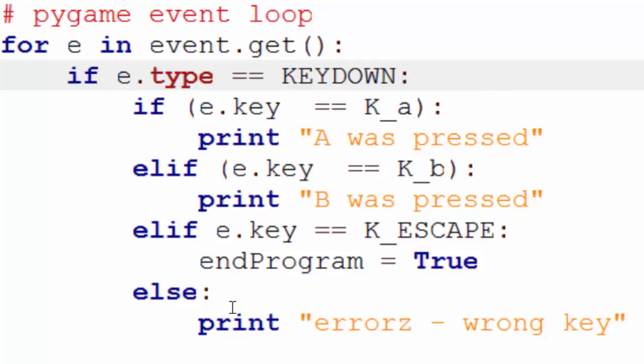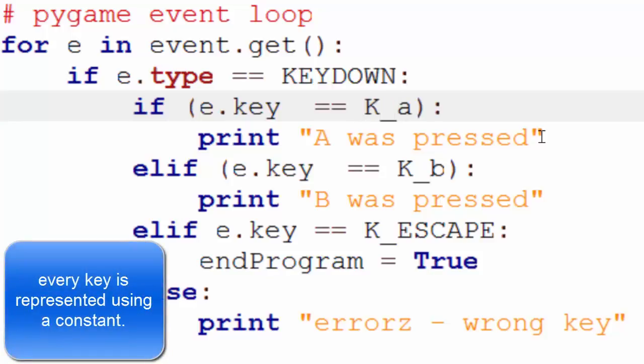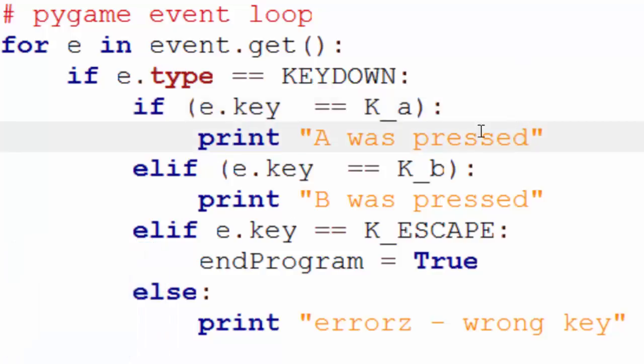I then got a series of if statements, which basically are checking which type of key has been pressed. So e.key is basically saying, okay, this is the key that has been pressed, now that I know it's a keydown event. And k underscore a is basically a constant that Pygame uses to represent the a key. If I've just done it like that, well, it's quite easy for me to name a variable called a, so it would get very confusing, which is why it's written like this. So if the a key was pressed, k underscore a, then I want to print that line of code out. Elif, the b was pressed, I want to run that line of code. Otherwise, I want to print an error message out.